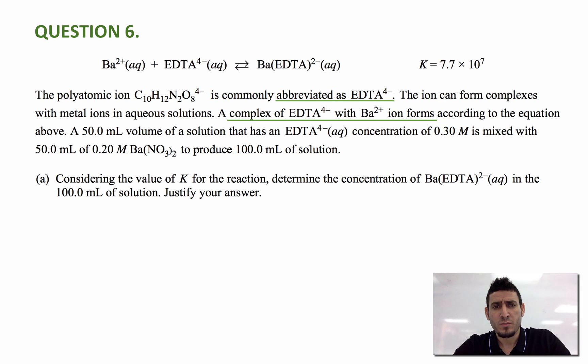So we have Ba 2+ plus EDTA 4- in equilibrium with the complex ion Ba(EDTA) 2-. The equilibrium constant is given as 7.7 times 10 to the power 7.